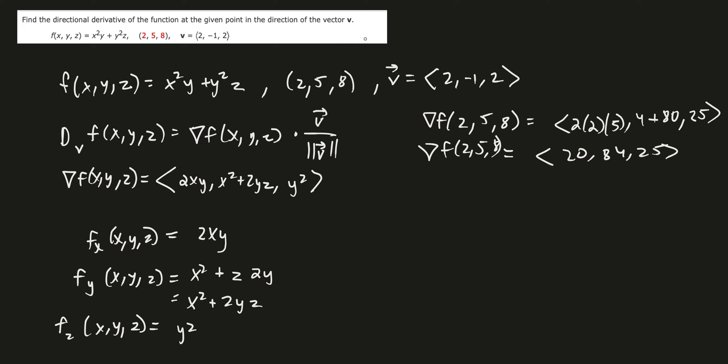Now we have to find our unit vector. We have our vector and the magnitude of our vector is the square root of 2 squared, which is 4, plus 1, plus 4, which is 3. So we obviously don't have a vector that's a unit vector, so we have to find the unit vector.